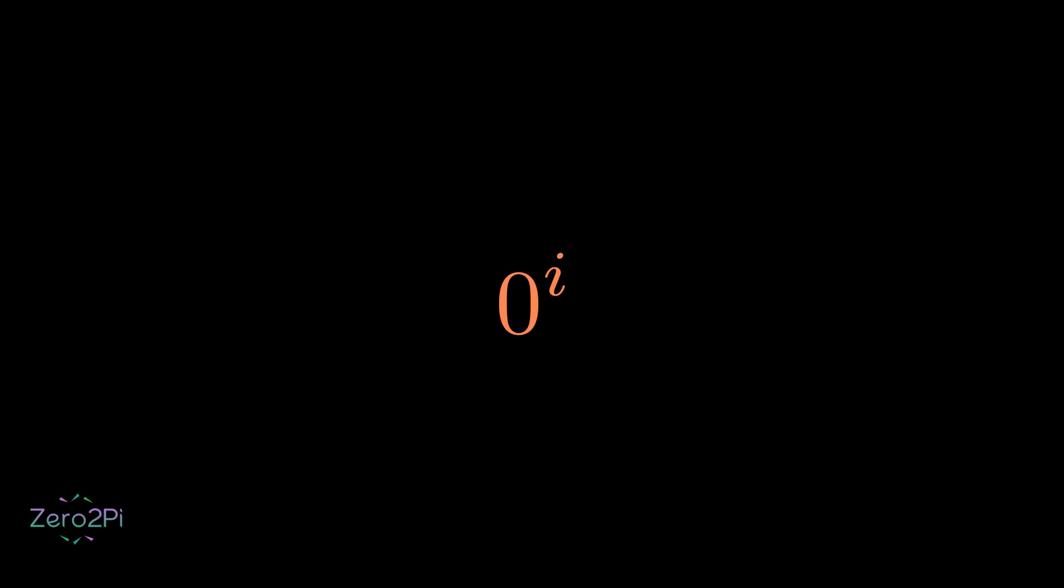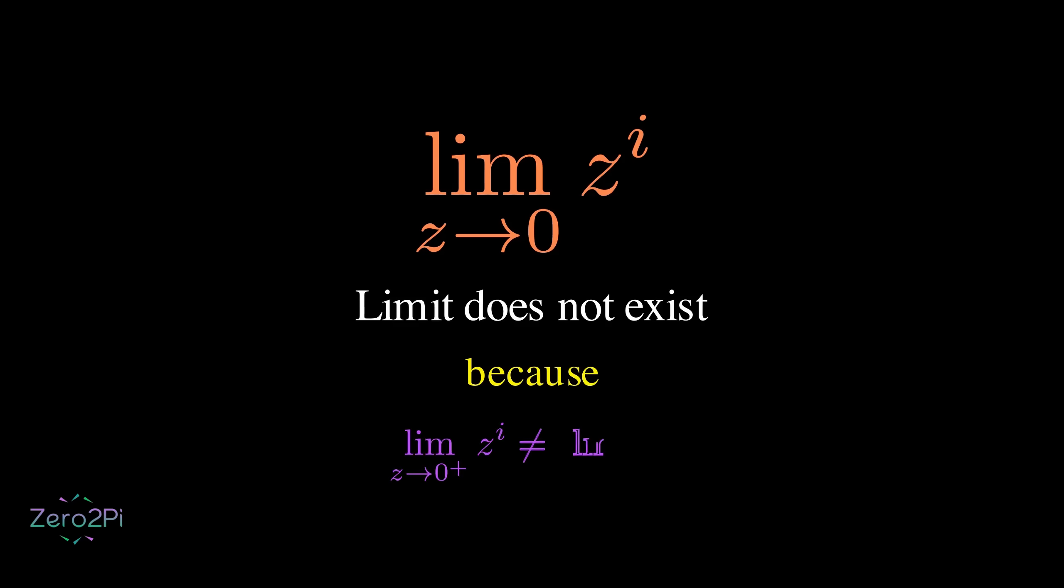Back to the topic. So if instead of evaluating zero to the power of i directly, we explore what happens as a number, let's call it z, gets infinitely close to zero. To do that, we need to bring in limits. But again, there is a problem. The limit as z approaches zero does not exist, because the answer you get when approaching from the positive side is not the same as the answer you get from the negative side.